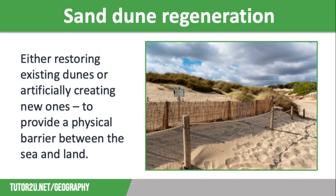Our final soft engineering strategy is sand dune regeneration, which means either restoring existing dunes or artificially creating new ones. There are several ways this can happen: planting vegetation such as marram grass so the long roots bind the sand together; fencing the dunes off to stop them being trampled while they become established, which also encourages sand to collect against the fences; and building sand traps to catch windblown sand, or adding extra sand to wind-eroded dunes, which can then be shaped into gently sloping dunes.